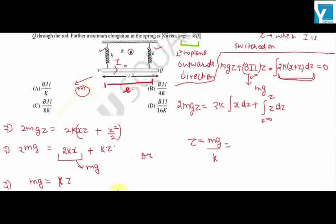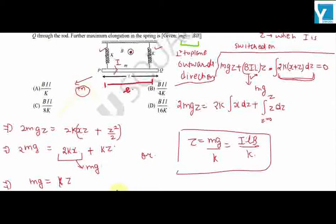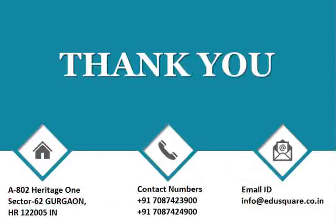We are given that magnitude of mg equals ILB, so z equals ILB/k. Looking at the options, ILB/k is the right answer.